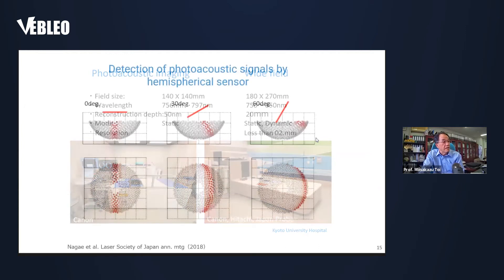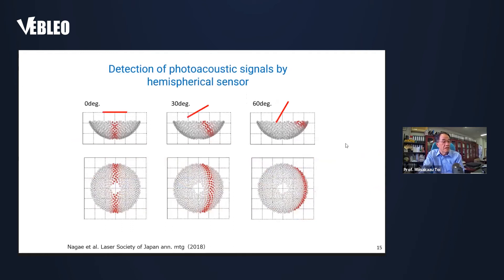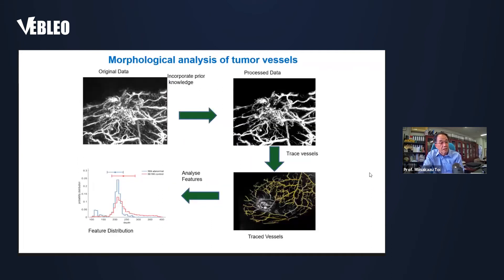For detection of photoacoustic signals, we use a hemispherical sensor. In order to reconstruct the 3D image of running vessels, it is necessary to receive photoacoustic signals propagating in inverse directions. We made this analysis from various points. Before morphological analysis, we marked hundreds of areas of the photoacoustic image that we thought might be blood vessels — based on fundamental knowledge — and the computer smoothly merged them together to extract the blood vessels.